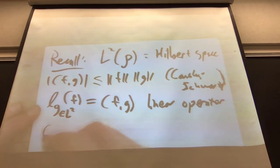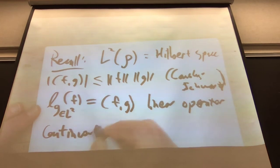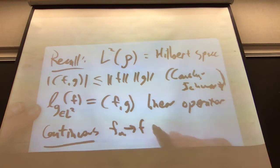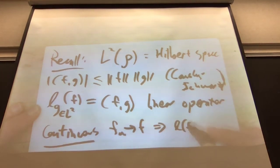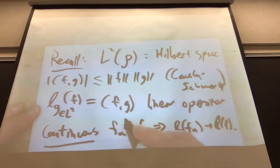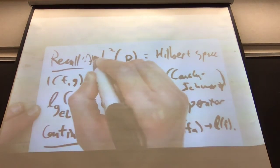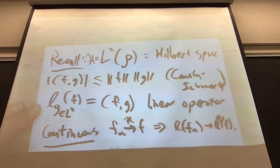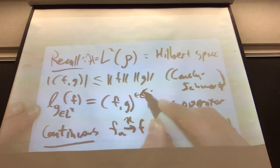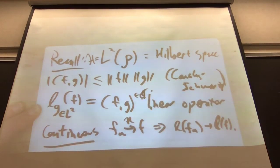This is a linear operator and it's continuous. Continuous means: if F_n converges to F in the Hilbert space H — in other words, F_n minus F in the norm of the Hilbert space converges — then L(F_n) converges to L(F). Since we're mapping to complex numbers, this is just complex numbers converging.